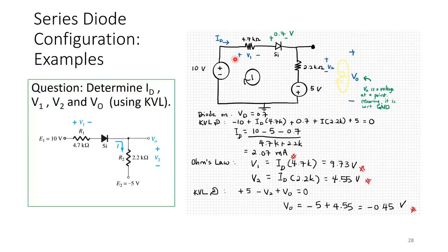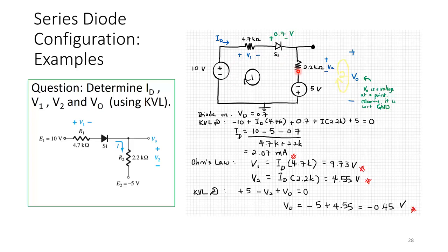Since the diode is on, VD equals 0.7 volts. Doing KVL around the loop with Ohm's law substituted directly: minus 10 plus ID times 4.7 kilohm plus 0.7 plus ID times 2.2 kilohm plus 5 equals 0. Solving for ID gives 2.07 milliamps.